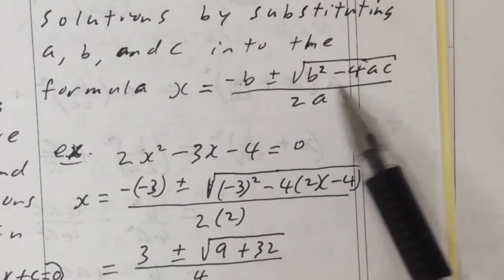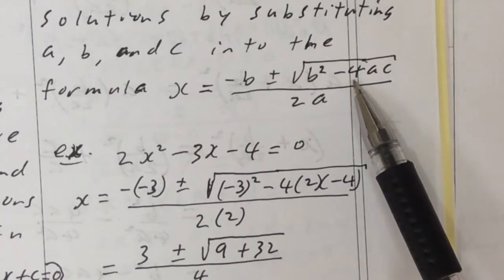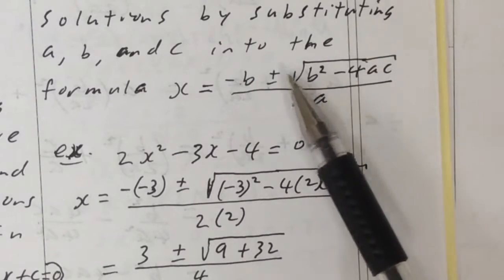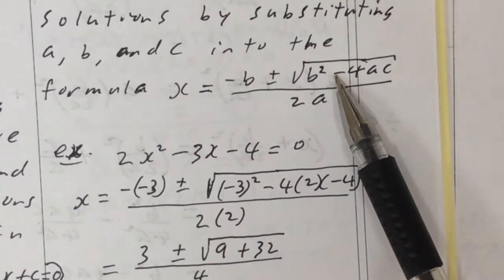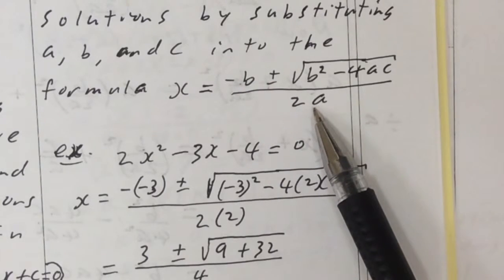If the discriminant is 0, then the plus or minus does nothing. You're doing plus or minus 0. So you really only get one solution, which is negative b over 2a.